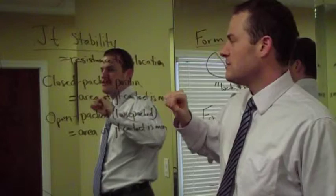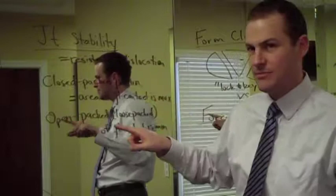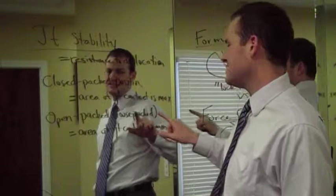As we talk about joint stability, I want to talk about two pieces, closed-packed position or open-packed position. Closed-packed position is the area of joint contact is at a maximum, whereas open-packed position or loose-packed position is the area of joint contact is at a minimum or away from the maximum.